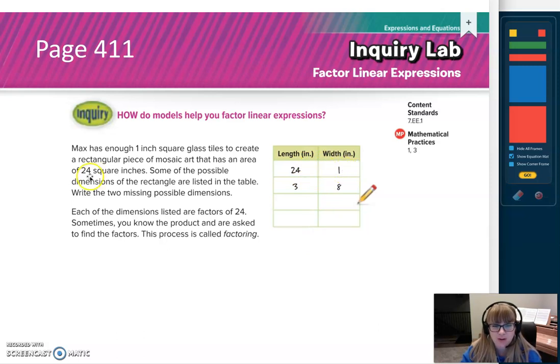24 times 1, that will produce the area of 24. So that would just be a really small, thin rectangle that's really long. Another possibility is 3 and 8. So that would mean it would be 3 squares high by 8 squares wide, and altogether that's going to be 24 of those 1-inch square tiles. So what are the other possible dimensions? Pause the video now.